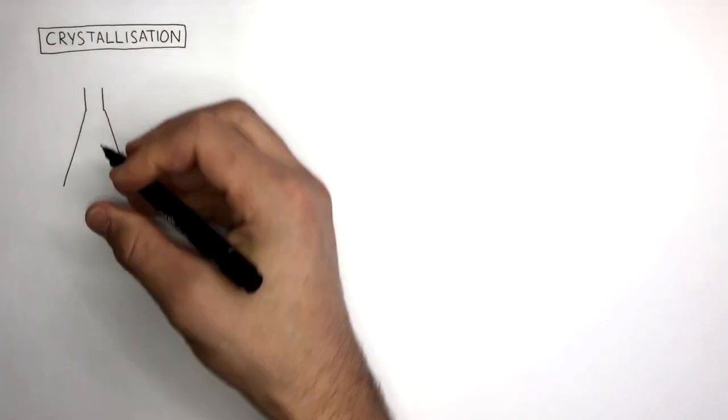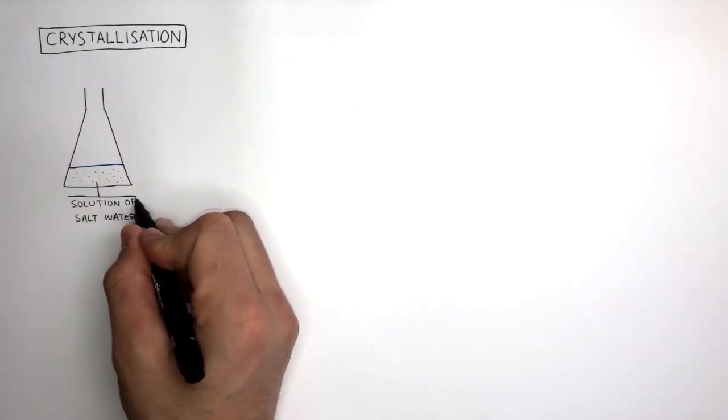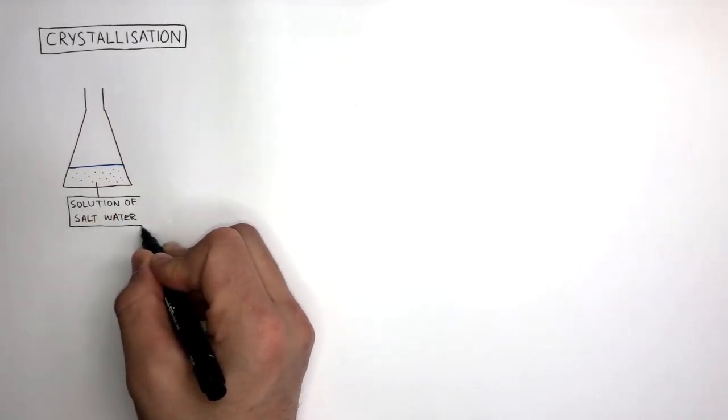So in this example, we have a conical flask containing a solution of salt water. This is just salt dissolved in water.